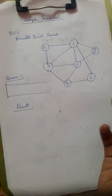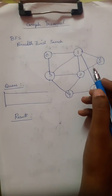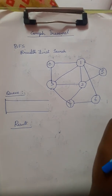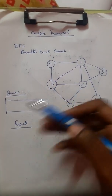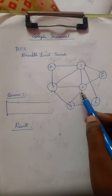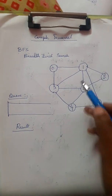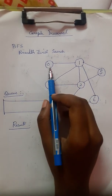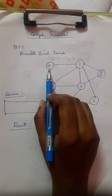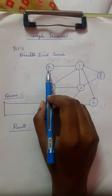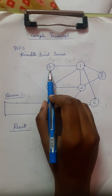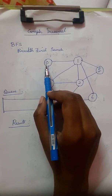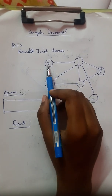We will go straight to a problem example. In an exam, if no particular starting node is given, you can start from any node; if they specify a starting node like 1 or 2, start from that. In our example, we are going to start from node 0.